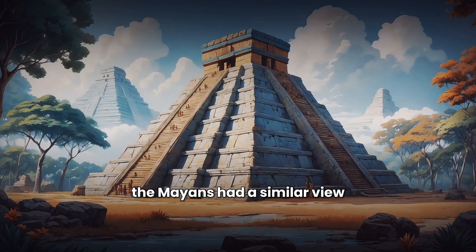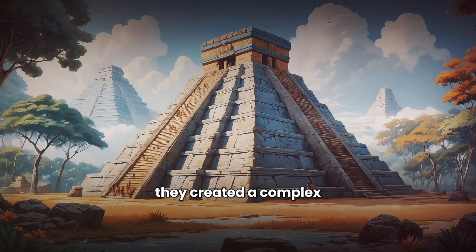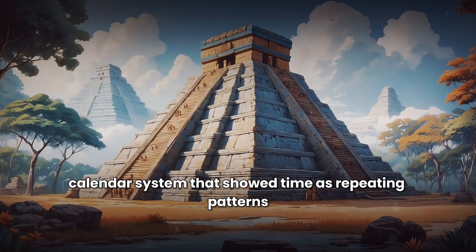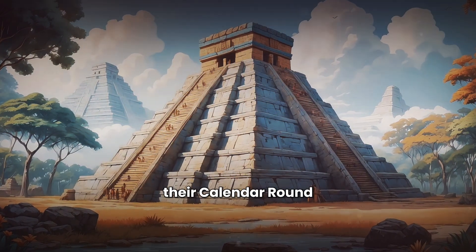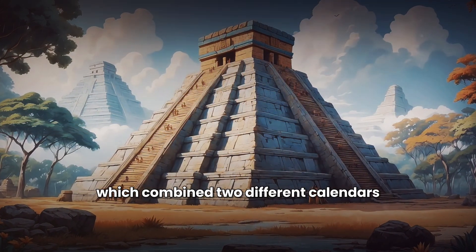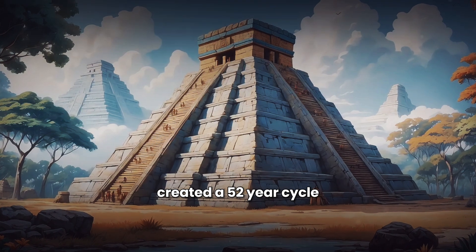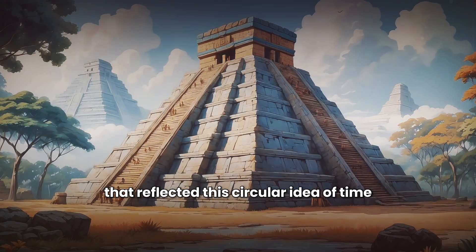The Mayans had a similar view. They created a complex calendar system that showed time as repeating patterns. Their calendar round, which combined two different calendars, created a 52-year cycle that reflected this circular idea of time.